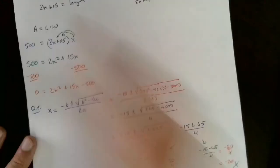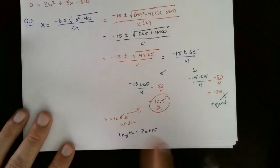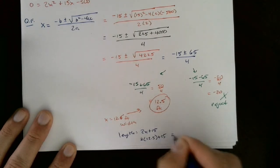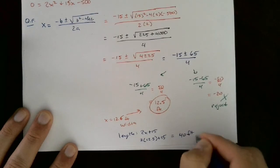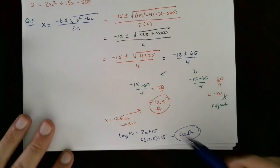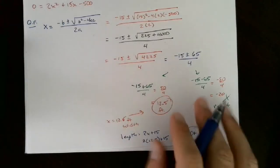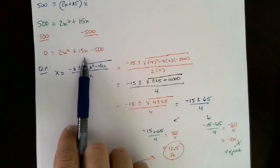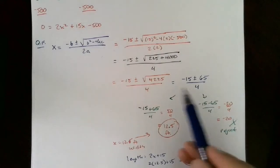So x = 12.5 feet is the width. Make sure you answer the entire question - what's the length? Go back to your let statement: the length is 2x + 15. Now substitute x = 12.5: the length is 2 times 12.5 plus 15, which equals 25 plus 15, which equals 40 feet. So the dimensions are 40 feet by 12.5 feet - the length and the width.